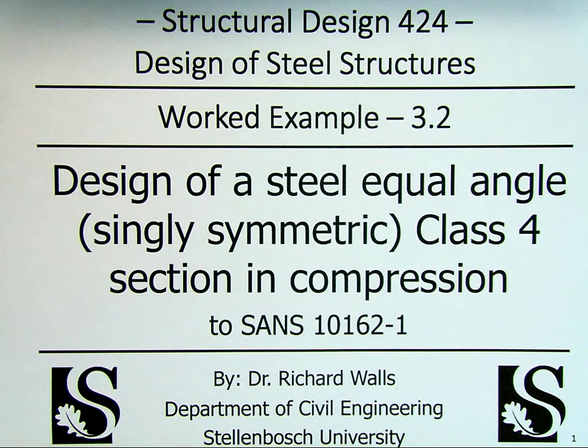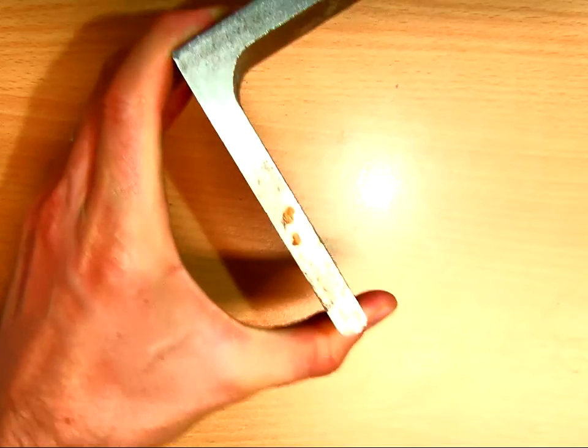Good day ladies and gentlemen and welcome to this video. We're going to be looking today at the design of a steel equal leg angle, which is a singly symmetric section. It will find its class 4, which means it experiences local buckling and we're going to design it in compression to SANS 10162 Part 1, the South African Code of Practice.